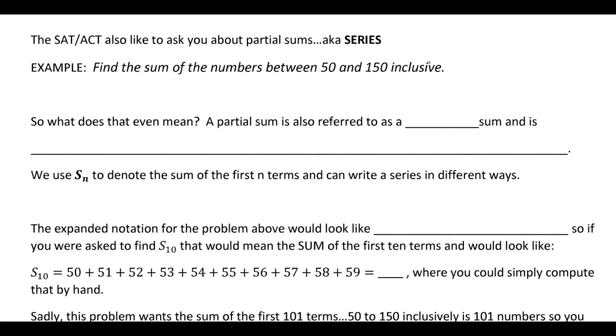A partial sum is also referred to as a finite sum, and is adding the terms of the sequence together. We have notation. Just like a sub n goes with a sequence, S sub n is to denote the sum of the first n terms. And you can write a series in different ways. You can use expanded notation or sigma notation. We're first going to talk about expanded notation.